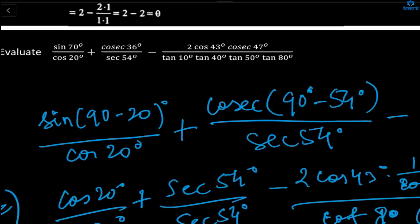For the last term, 2 cos 43° · sec 43°: sec equals 1/cos, so cos 43° times 1/cos 43° equals 1, giving 2 times 1. In the denominator there are four tan terms. We change tan 10° to cot 80° and tan 40° to cot 50° using the complementary rule. Cot 80° is 1/tan 80°, which cancels tan 80°; cot 50° is 1/tan 50°, which cancels tan 50°. So the denominator equals 1, and the whole expression is 1 plus 1 minus 2 times 1, which equals 2 minus 2 equals 0.